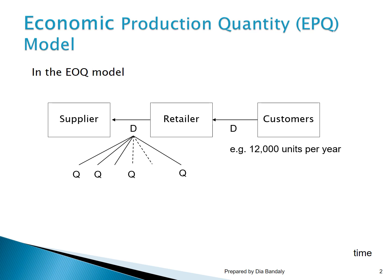When we decide to order that quantity, let's see how it varies with time. On the horizontal axis we have time; on the vertical axis, the inventory on hand. In the EOQ model, when you place an order Q with your supplier, he sends you all of Q in one shipment, so your inventory on hand jumps directly from zero to Q. Then, to satisfy demand, you use what you have on hand at rate D. As inventory approaches zero, you receive a new shipment, and the same cycle repeats — each triangle representing one cycle.